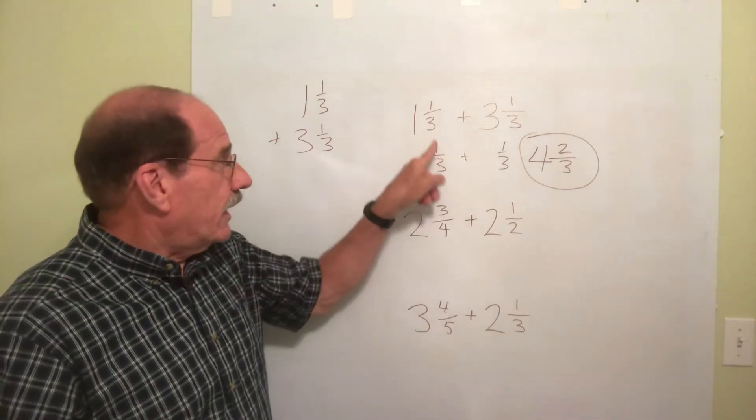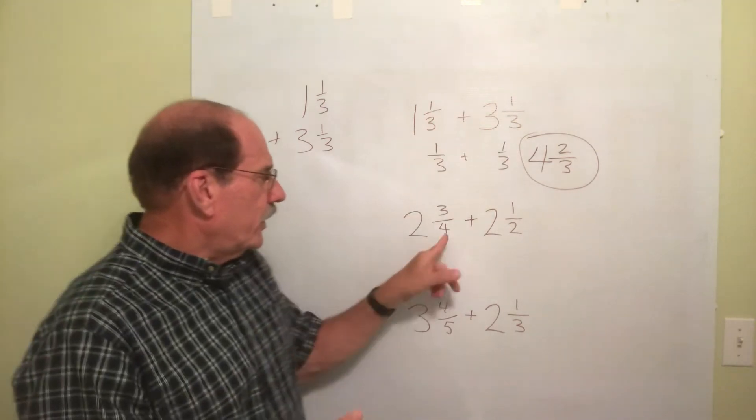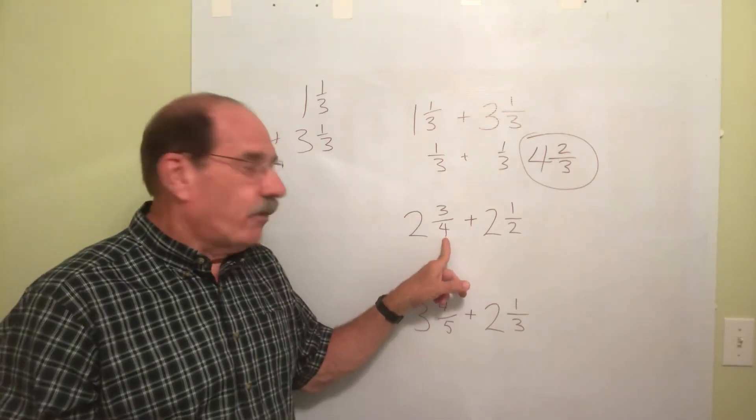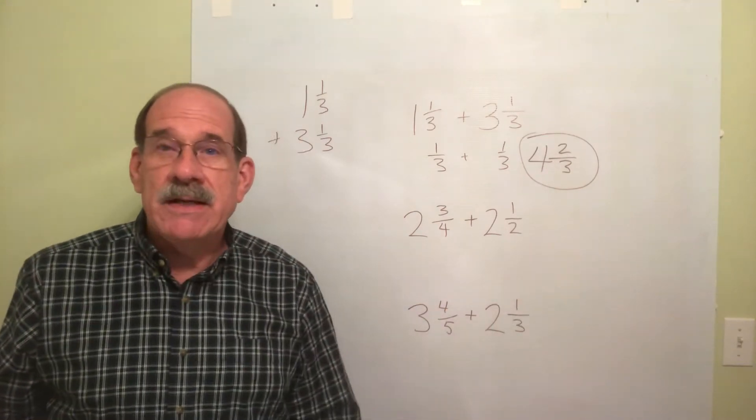Let's take a look at this. Now see, realize in this one, we already had a common denominator for our fractions. Here we don't. Here we have 4 as a denominator. Here is 2. Well, we have to have a common denominator.